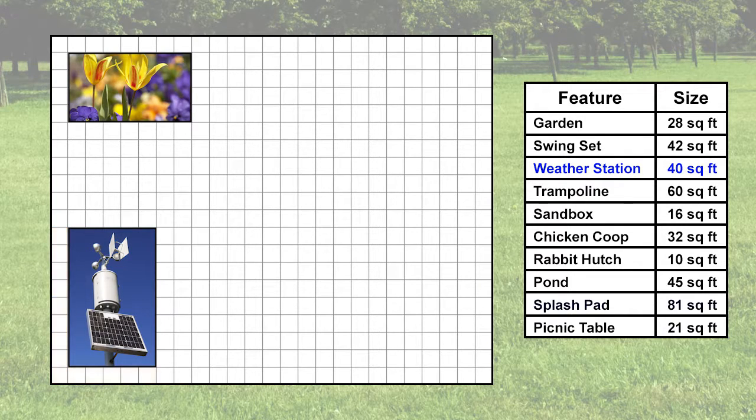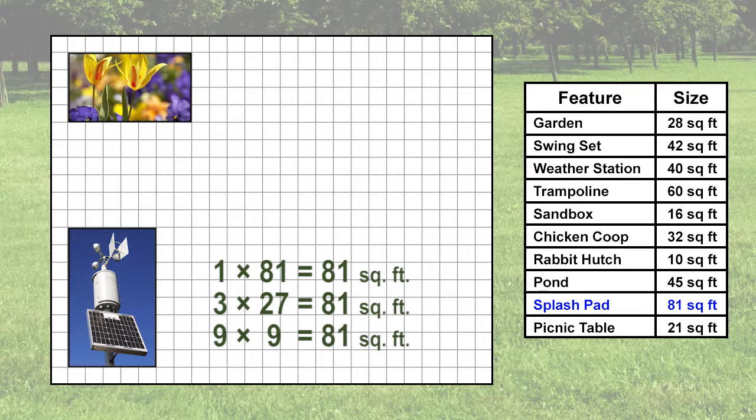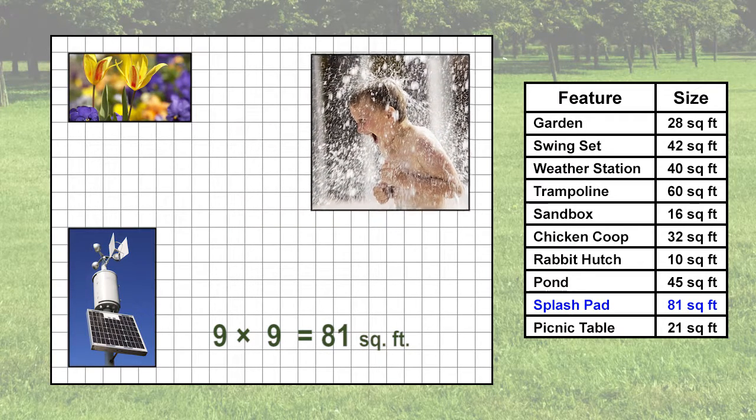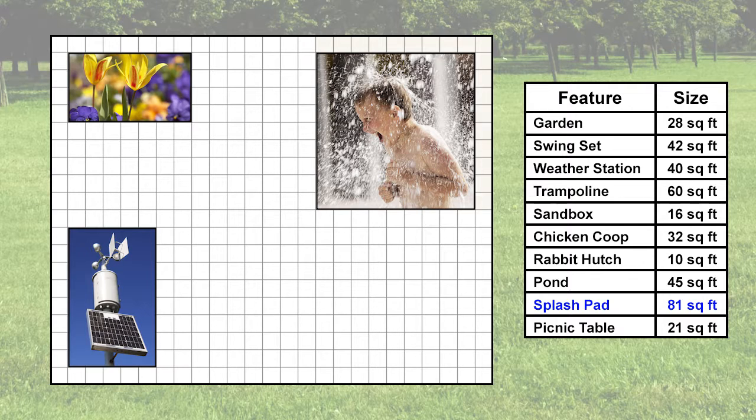Now let's find the area for the splash pad. The factor pairs for the area are 1 times 81, 3 times 27, and 9 times 9. Let's have the splash pad take up 9 times 9 feet to equal 81 square feet and place it at the top right corner of our graph paper. Again, we need to leave 1 foot from the edge of the graph paper.